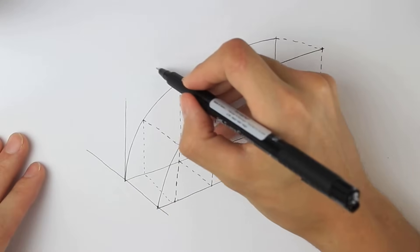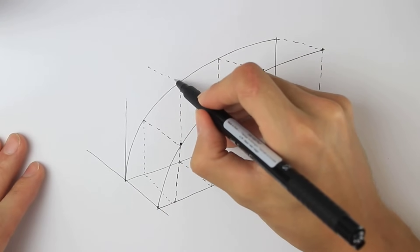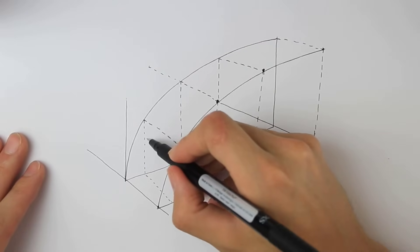Using our rectangle duplication methods from earlier, we can mirror these cross sections and create another identical curve further away in perspective.